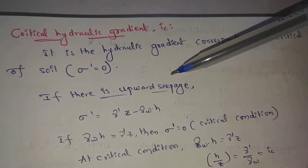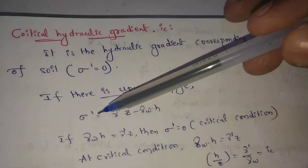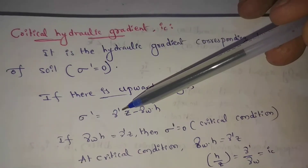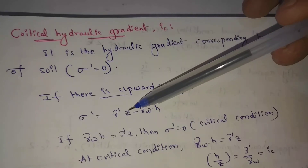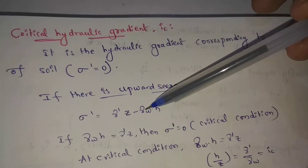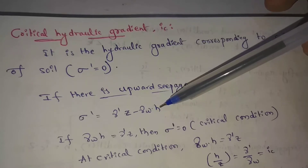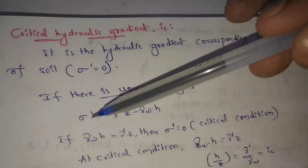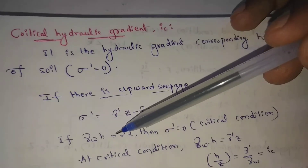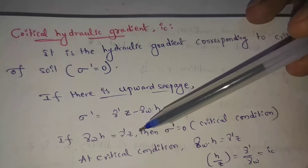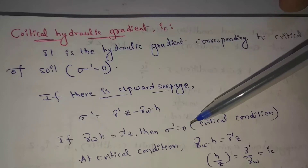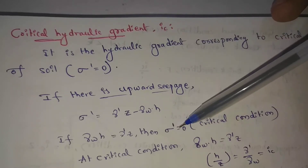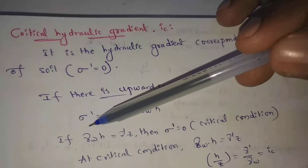If there is upward seepage, the effective stress value is given by: gamma dash into Z minus gamma w into H, where Z means seepage length, gamma w means unit weight of water, and H means total head loss. So if gamma w into H equals gamma dash into Z, then sigma dash equals zero — that is the critical condition where effective stress is zero.